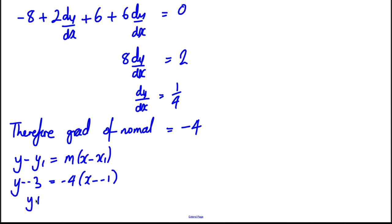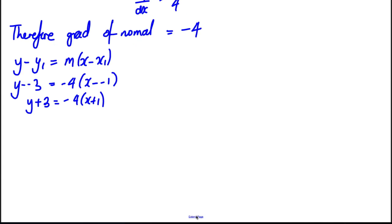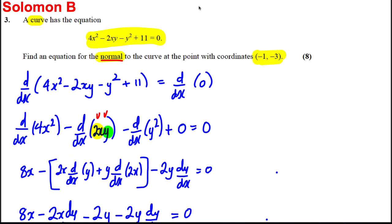So y + 3 is going to be equal to -4(x + 1), and that's absolutely fine as our answer, but we may want to write that as follows: subtract 3 from both sides, y = -4x - 7, and that is the equation of your normal, and we're done for this question.